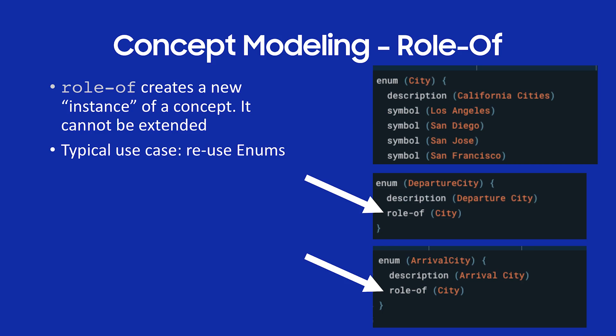Kind of the sister to extends, but different, is role of. Role of creates an instance of a concept. The best way to explain that: I have this enumeration of California cities — Los Angeles, San Diego, San Jose, etc. I'm building a travel capsule and I want a departure city concept and an arrival city concept, where the possible values for both are the exact same set. So I create a base enum of city with all the California cities, and then my departure city takes a role of city and my arrival city also takes a role of city.